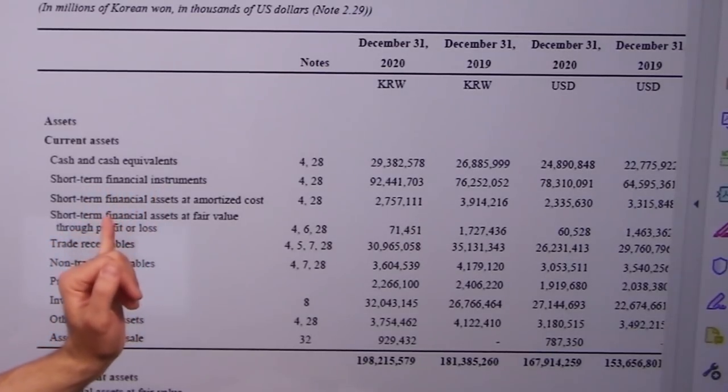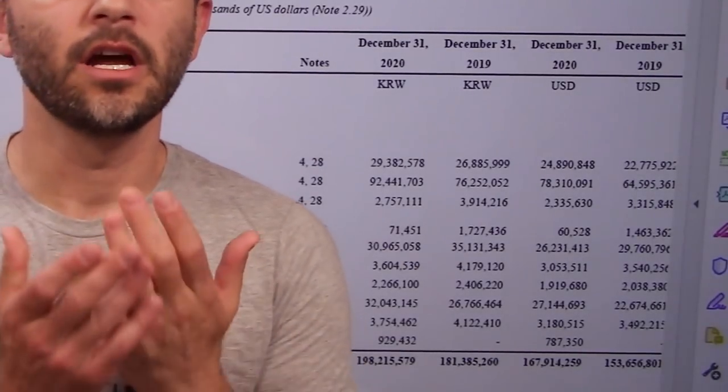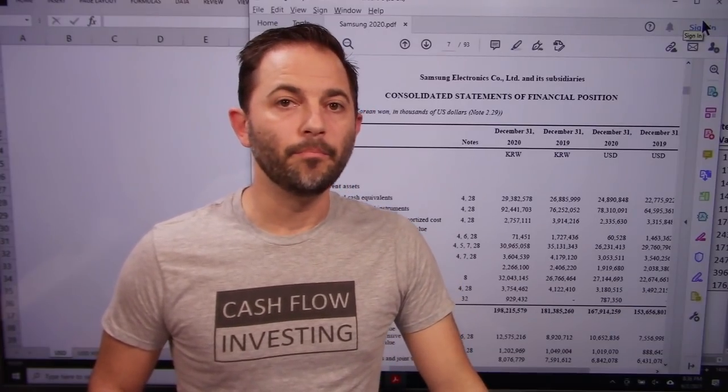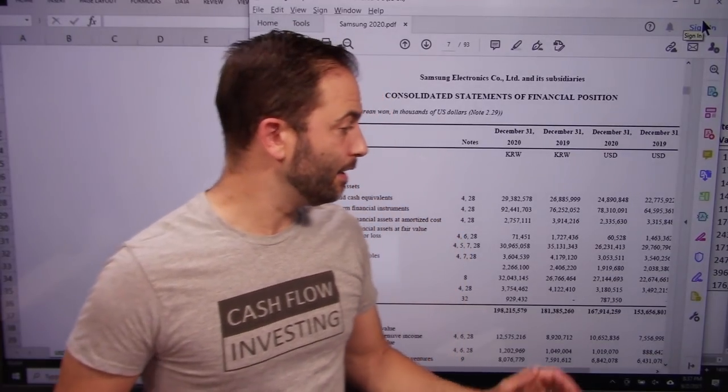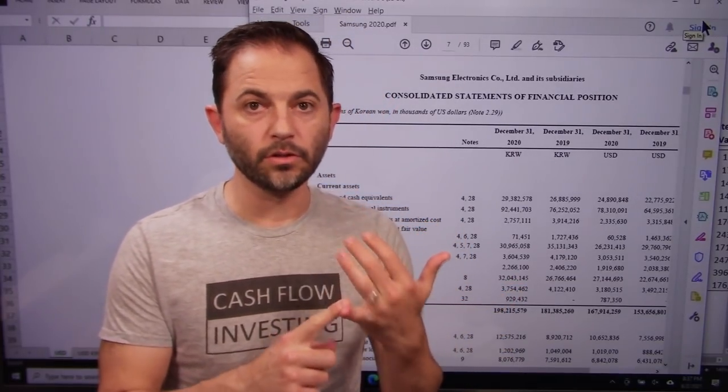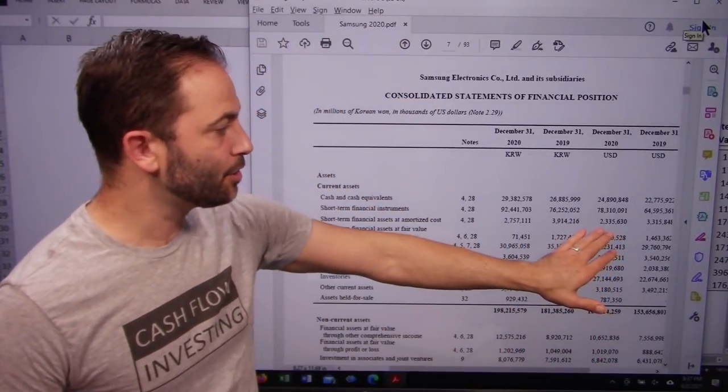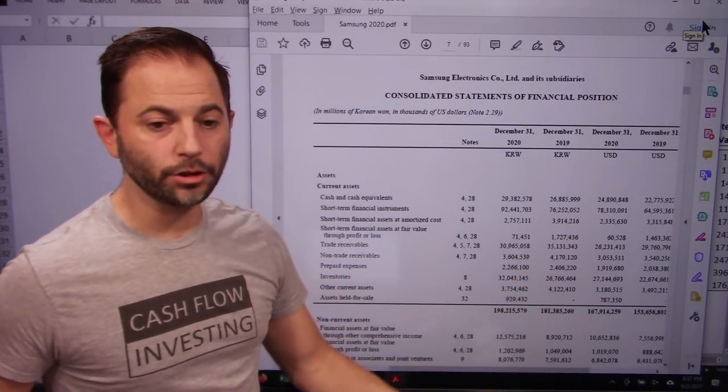Right below that, short-term financial assets at amortization cost. Another highly liquid asset, 2.3. This here is over 100 billion dollars in cash that they have on their balance sheet that they've generated through operating activity over time, which is amazing to see. We do not see companies with this much cash on the balance sheet aside from the bohemias, the Googles, the Facebooks, the Apples, the Berkshire Hathaways. Those guys have this kind of cash and so does Samsung electronics. Kudos to them. That is quite the war chest.